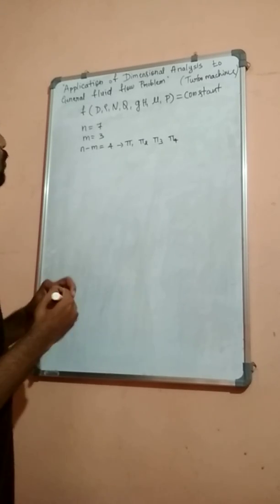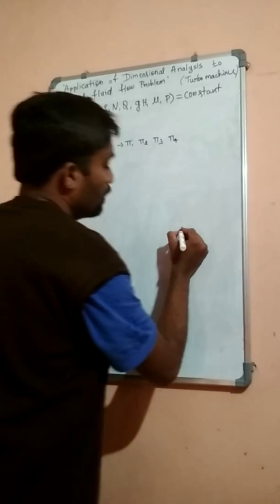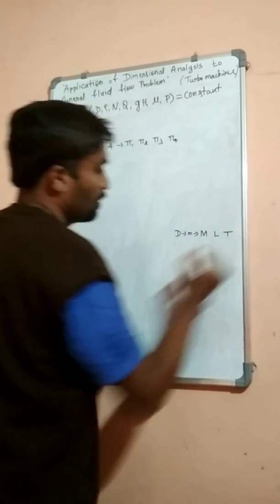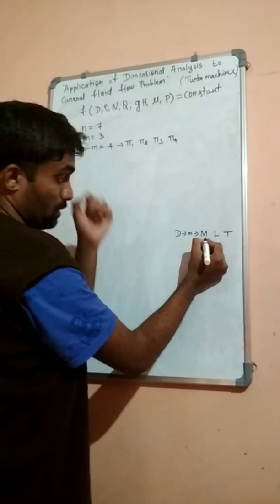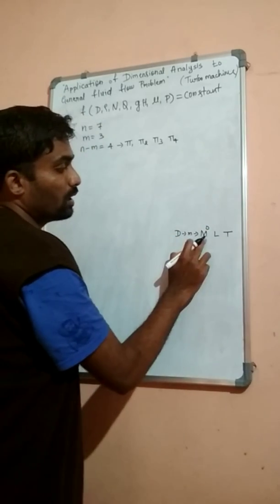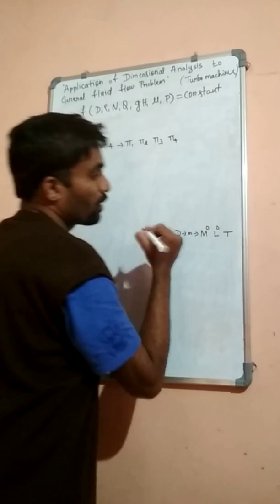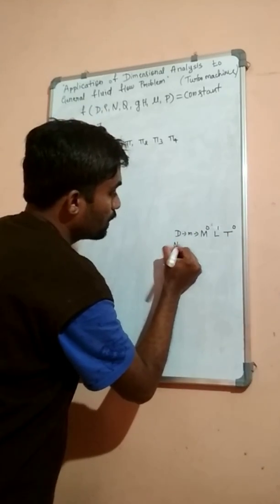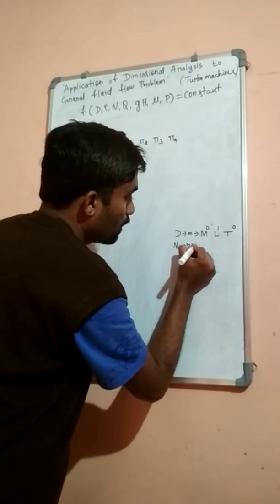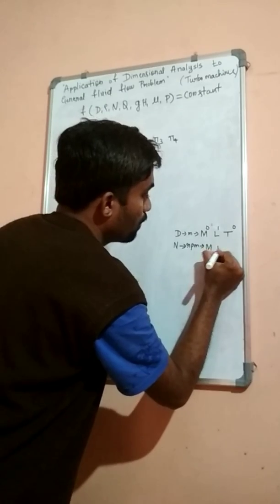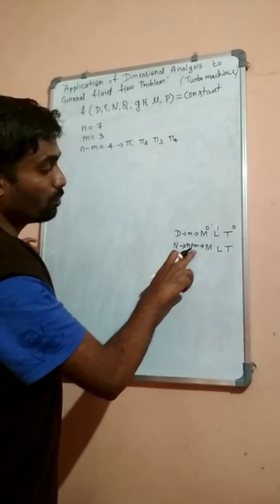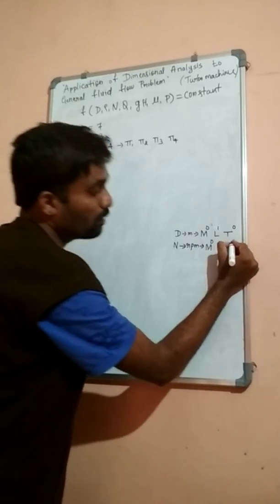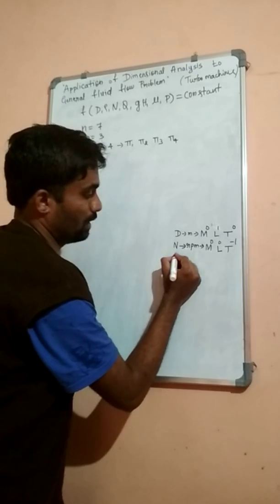Before proceeding, we write all variables in terms of M, L, and T. First, diameter D has units of meters, so it is M raise to 0, L raise to 1, T raise to 0. Next, variable N has units of revolutions per minute. Revolutions is dimensionless, so per minute gives M raise to 0, L raise to 0, T raise to minus 1.